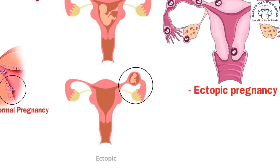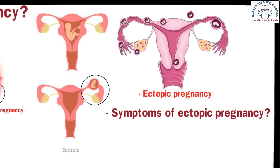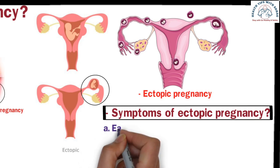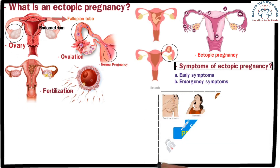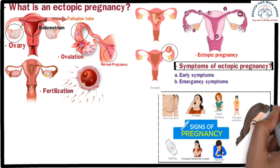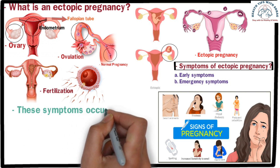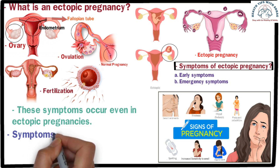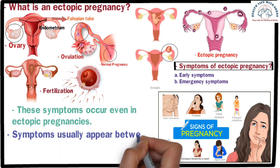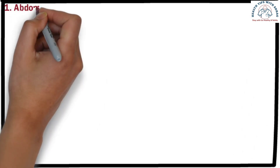What are the symptoms of ectopic pregnancy? The symptoms can be divided into two categories: early symptoms and emergency symptoms. Typically, at the beginning of an ectopic pregnancy, no distinct symptoms are noticeable. The initial signs are similar to those of a normal pregnancy, such as missing periods, nausea or vomiting, and breast tenderness. These symptoms occur even in ectopic pregnancies. However, as the pregnancy progresses, the signs become more apparent. Symptoms usually appear between 4 and 12 weeks of pregnancy.